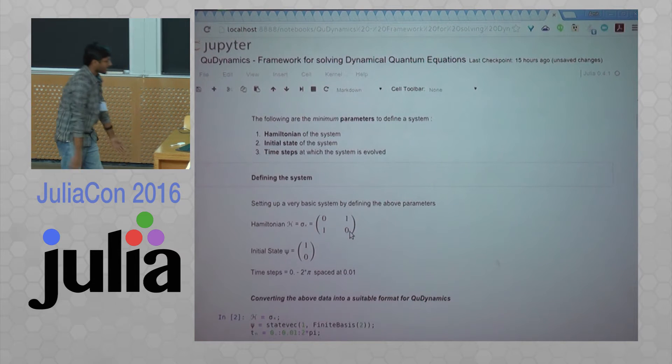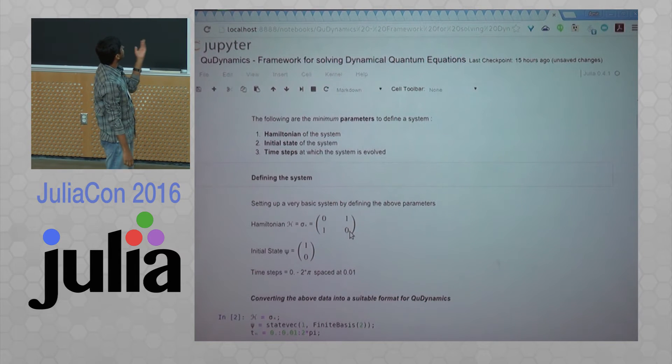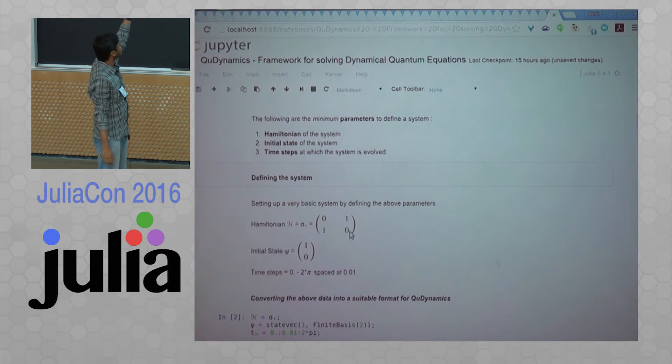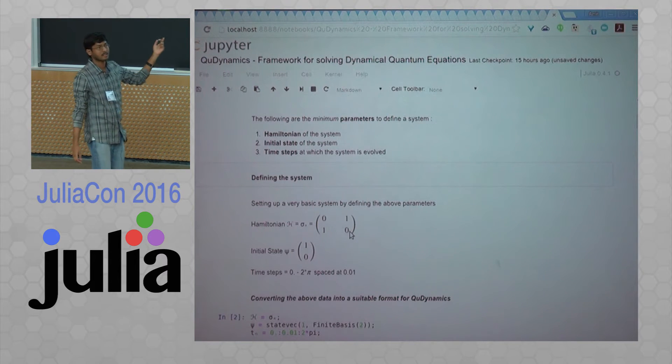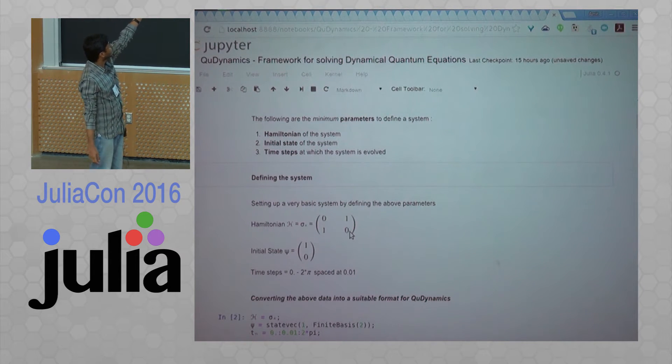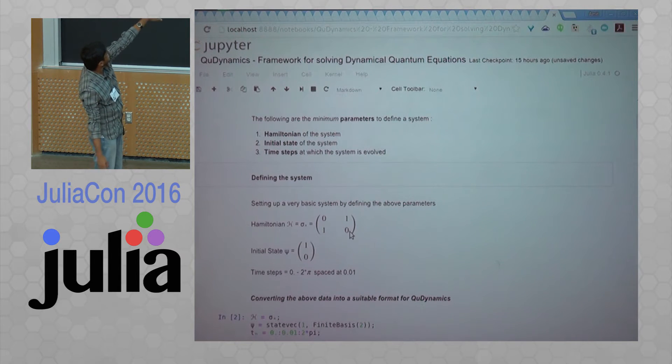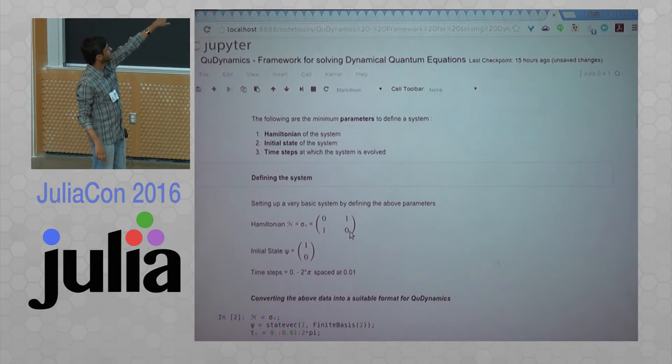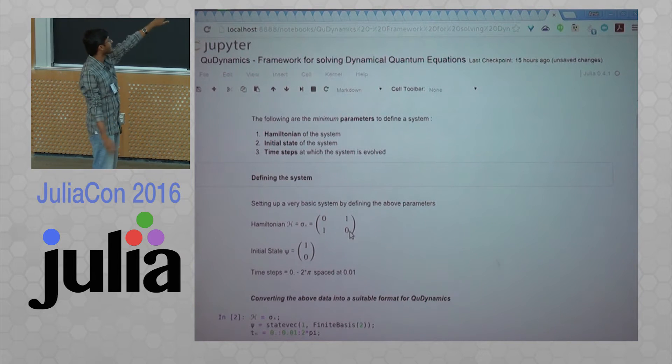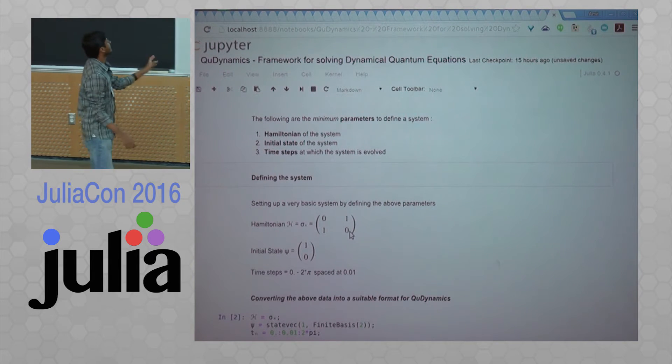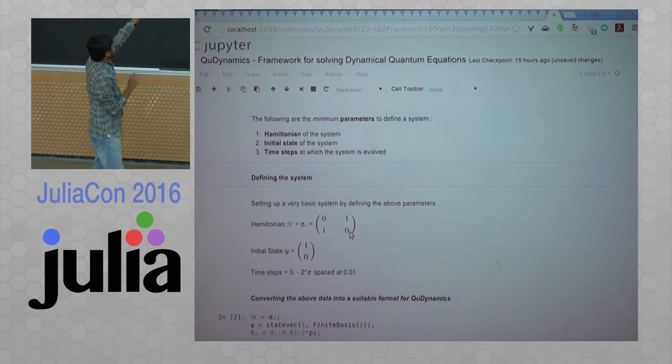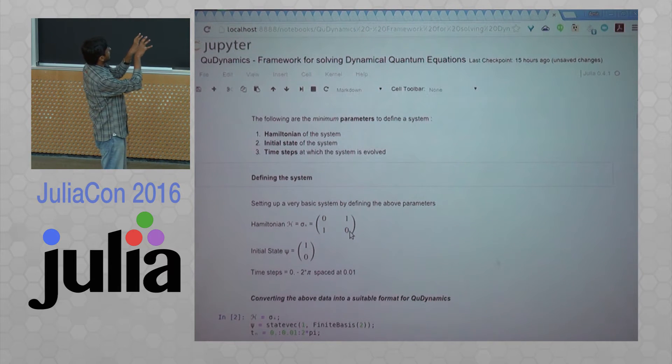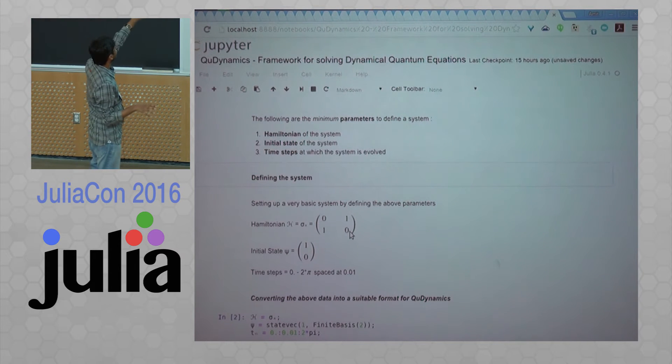So we are using three packages: QuBase, taking all the machinery from the base, Qdynamics which is the package that I have written, and PyPlot for some plotting stuff. The minimum parameters that we need to define a system are the Hamiltonian of the system. It is just a toy model that I have put up here. This is the sigma x, that is a Pauli matrix. And then there is initial state which is 1, 0, a column vector. And then my time steps of evolution are 0 to 2π spaced at 0.01. We are going to get a state vector at every 0.01 instance between 0 and 2π. That is basically what we are doing.